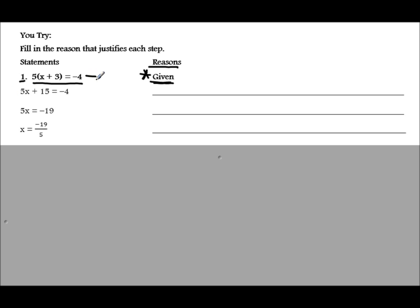Your job is to figure out how step 1 became step 2. If you notice, they took 5 and multiplied it to x to get 5x, and multiplied 5 to 3 to get 15, while negative 4 stayed the same. The property that allows us to distribute 5 to x and 3 is called the distributive property.